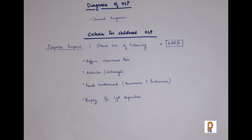The diagnosis of Henoch-Schönlein Purpura is entirely clinical. Lab findings may only give supportive evidence. According to the European League classification criteria for childhood HSP, there should be palpable purpura with at least one of the following — remembered with the mnemonic DARP: D for diffuse abdominal pain, A for arthritis or arthralgia, R for renal involvement, and P for biopsy showing IgA deposition.